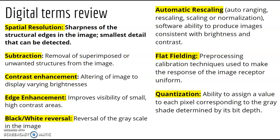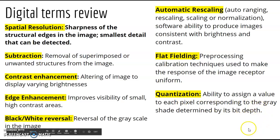Black and white reversal allows you to reverse black and white on the image. Automatic rescaling is the ability to produce images consistent in brightness and contrast. Flat fielding is another processing technique to make the image look more uniform. Quantization is assigning a value to each pixel according to its gray shade, determined by its bit depth.